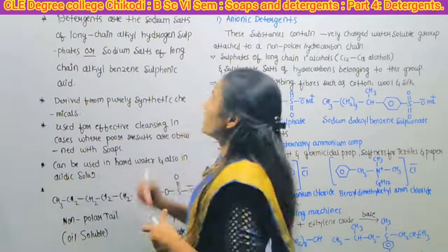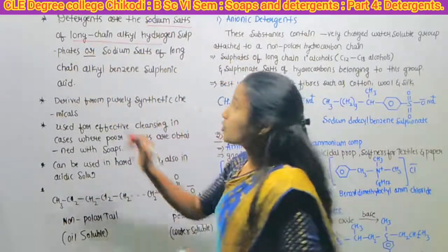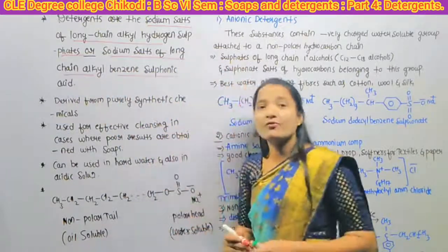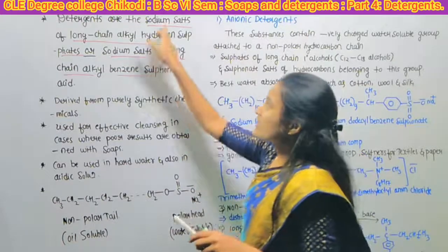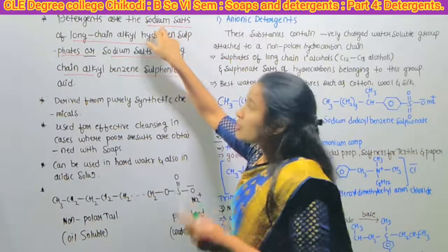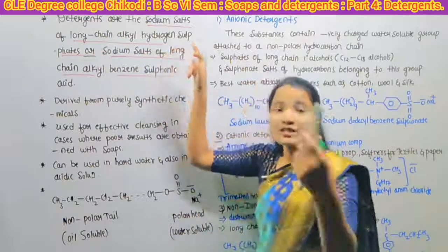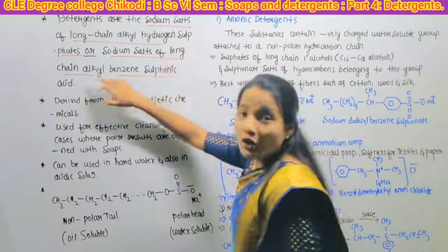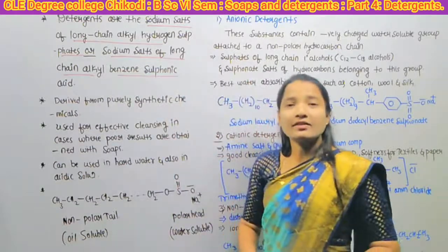Detergents are the sodium salts of long chain alkyl hydrogen sulfates, or sodium salts of long chain alkyl benzene sulfonic acid. These are the sodium salts of long chain alkyl hydrogen sulfates or sodium salts of long chain alkyl benzene sulfonic acid. This is the definition of detergents.